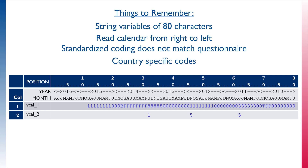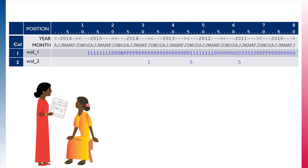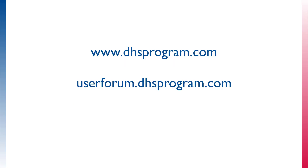Additionally, always check to see if a country or phase of the survey you are working with has country-specific codes or columns. This video provided a brief overview of how the contraceptive calendar data are stored as string variables in the datasets. If you have any additional questions, please visit our website or the DHS user forum.